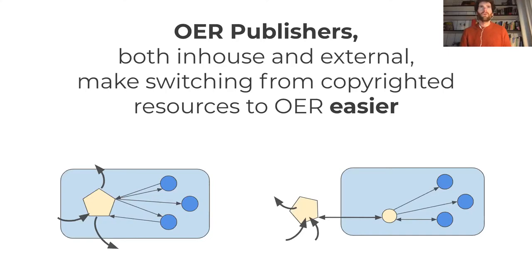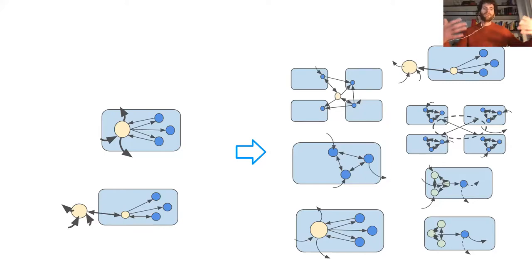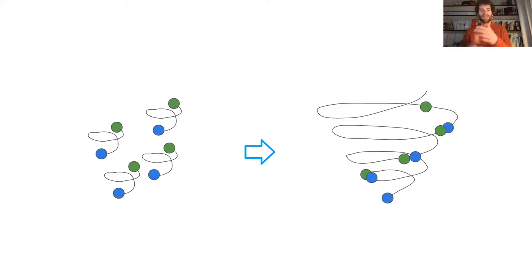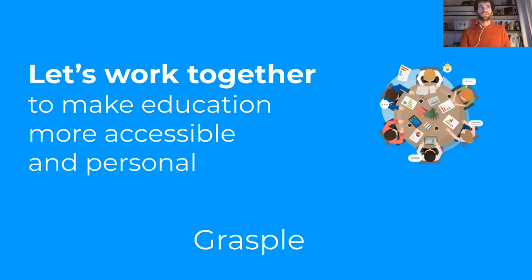As a final insight from us: we see an interesting role for OER publishers, whether in-house or external. They really help teachers — who often don't have much time — switch from copyrighted resources to open resources. That can then help them build on their collaboration once they have that first set of materials ready, so they can do their normal instruction and then edit, adapt, and start sharing by themselves. We really see this movement from disconnected efforts into building on each other's efforts.